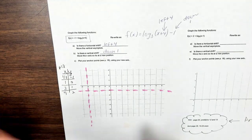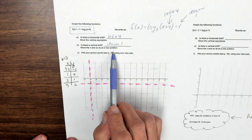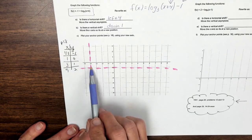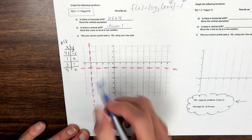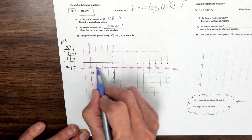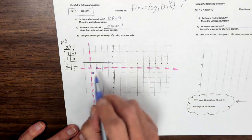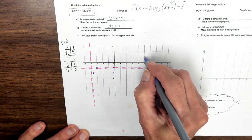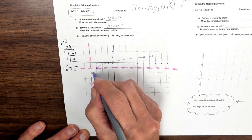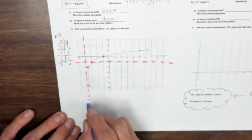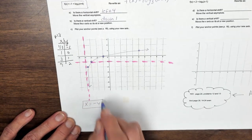Now plot your anchor points from page 18. Remember this is our new origin. We plot (1/3, -1), (1, 0), (3, 1), and (9, 2). And there we go — the asymptote is now x equals negative 4.